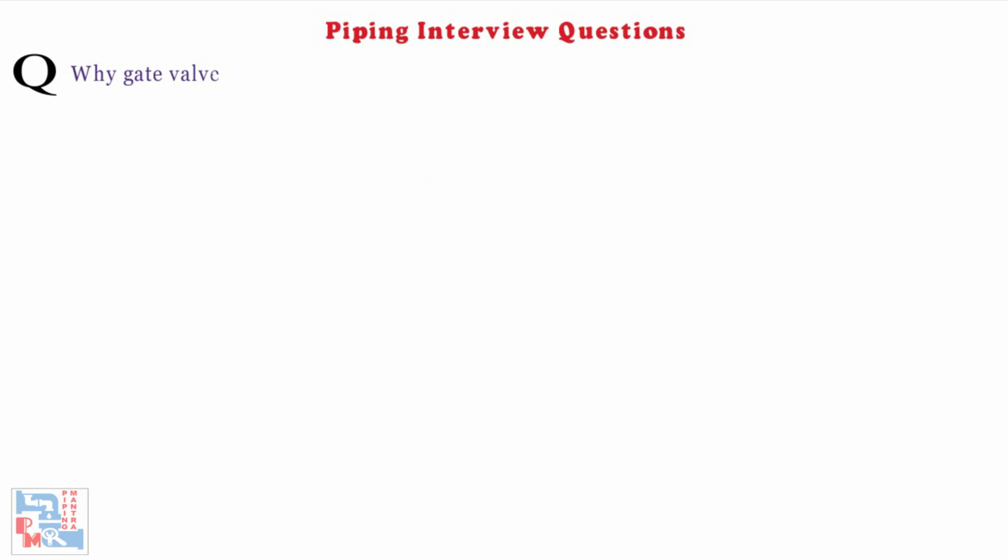Next, why gate valves are not suitable for throttling purposes? Because it will provide maximum flow when it is partially open.